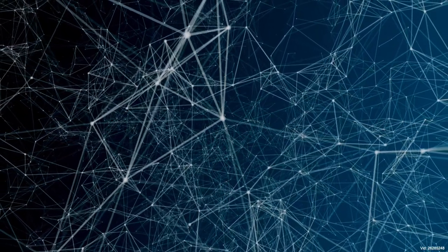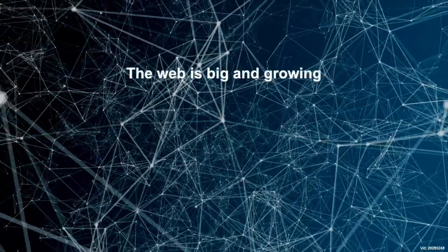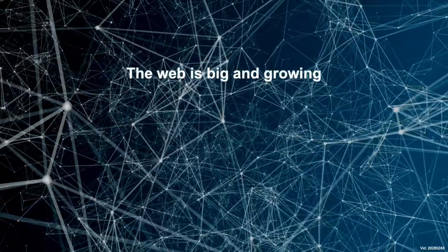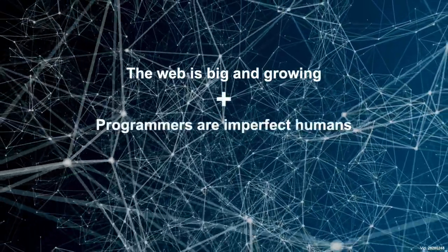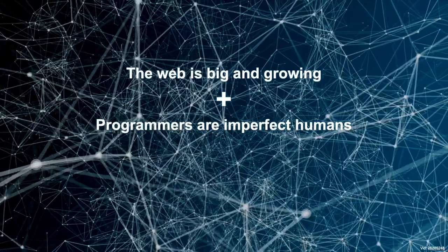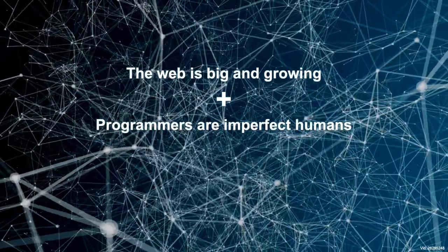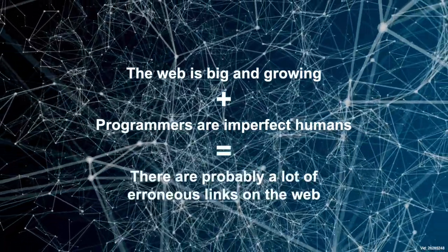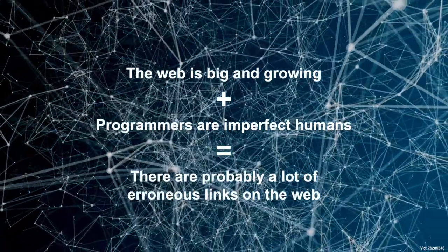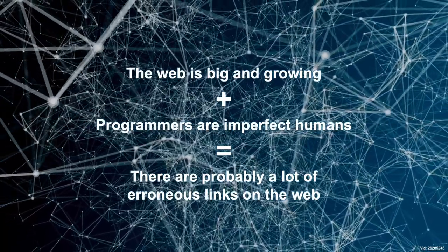These observations led us to consider a few axioms: one, that the web is big and growing; and two, that programmers are imperfect humans despite any claims to the contrary. As a result, we thought there are probably a lot of erroneous links out on the web.